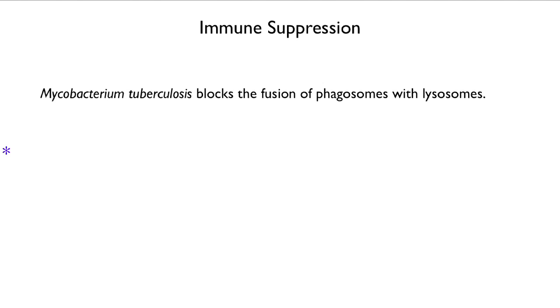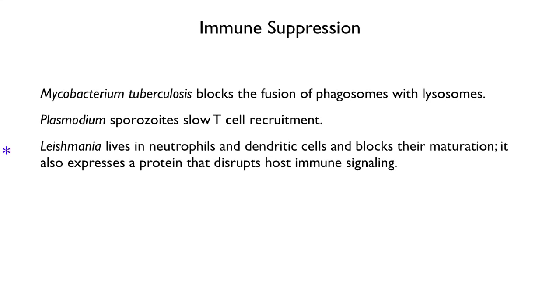Another thing pathogens can do, instead of evading the immune system, is suppress it — actually go in and knock it out. The TB bacterium, mycobacterium, blocks the fusion of phagosomes with lysosomes. Plasmodium has sporozoites that slow the recruitment of T cells, thereby slowing down the immune reaction against them. Leishmania lives in neutrophils and dendritic cells — both immune cells — and blocks their maturation. Blocking dendritic cell maturation means the signal that an infection is in the body never gets passed to the adaptive immune system, effectively cutting the enemy's line of communication. Leishmania also expresses a protein that disrupts host immune signaling.